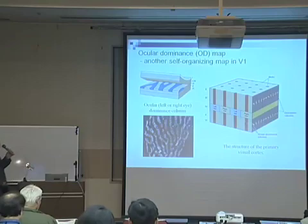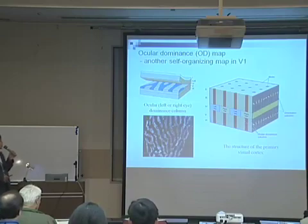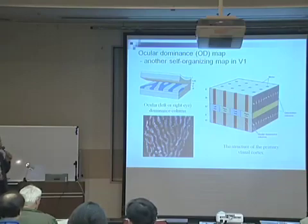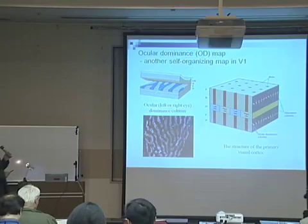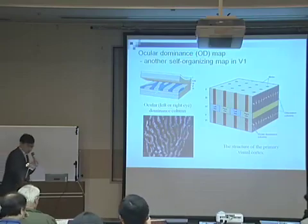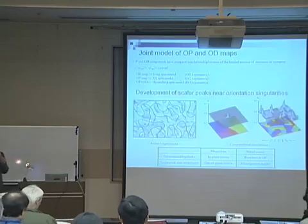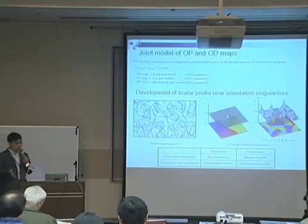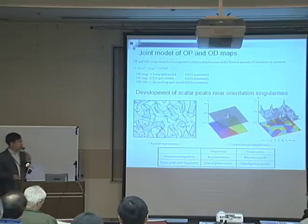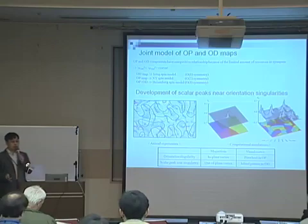Ocular dominance map is another typical component in V1. The neurons in V1 have the tendency to receive visual information only from left or right eye. And ocular dominance map represents the distribution of ocular dominance by two different colors. I said that the OP map formation can be understood by the analogy with the XY model. And similarly, OD map formation can be approached by using Ising model system.